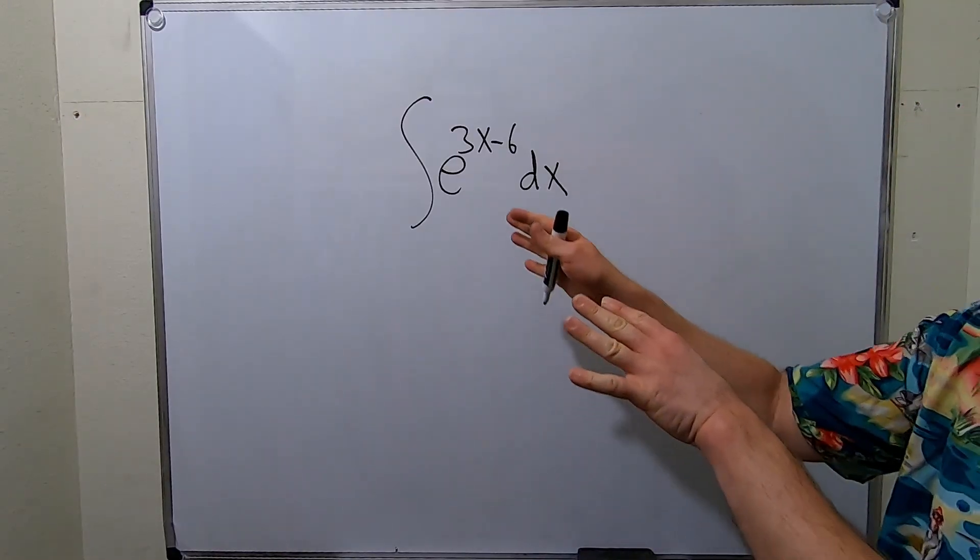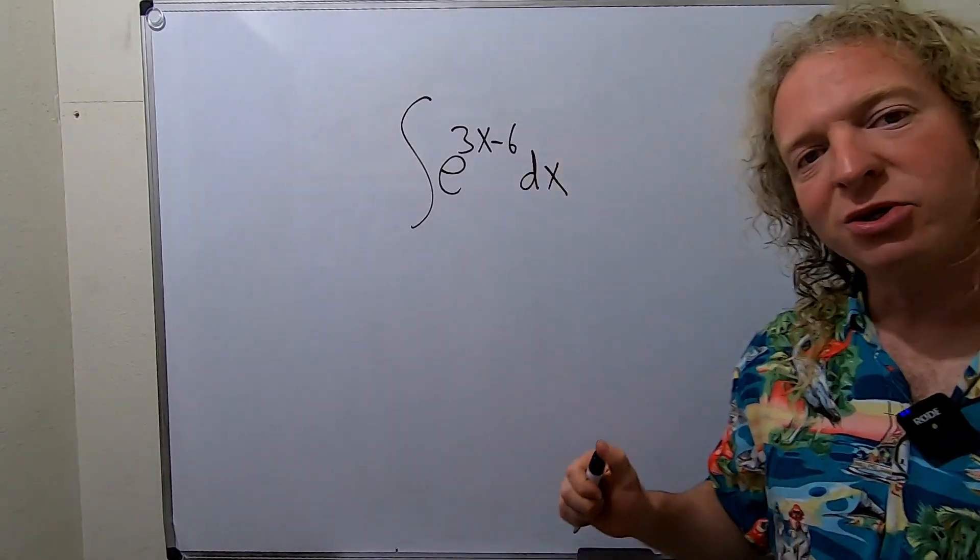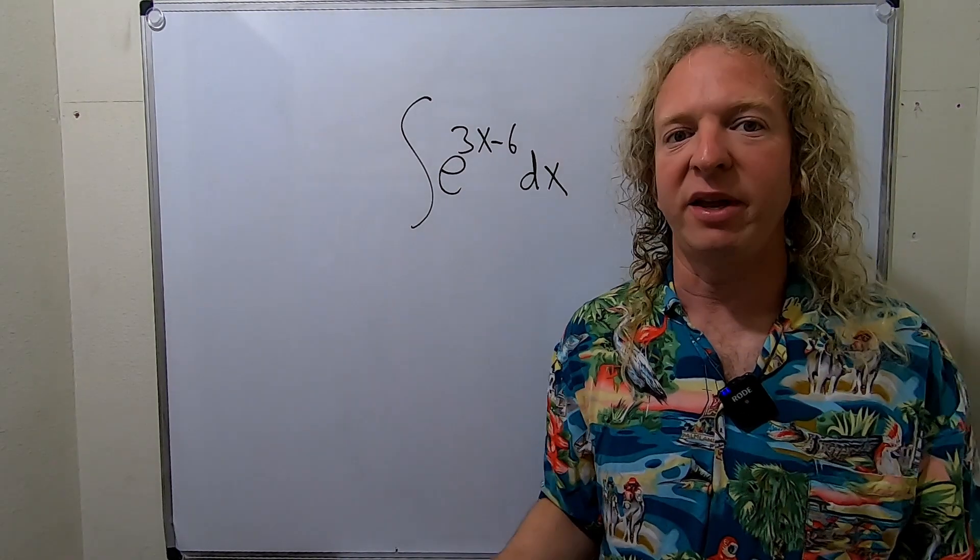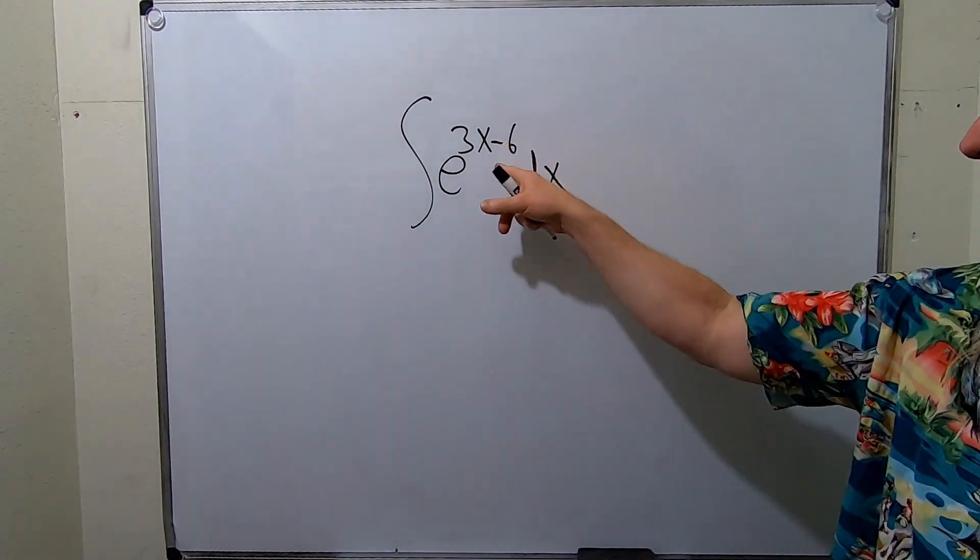In this video, we're going to integrate e to the 3x minus 6. So when you integrate e to the x, you just get e to the x. Except in this problem, we have something else besides x.